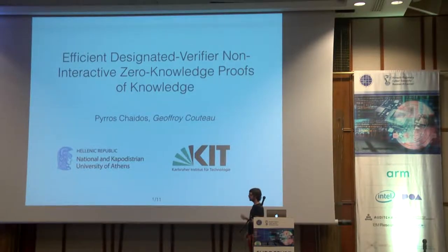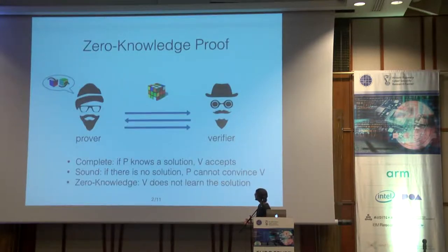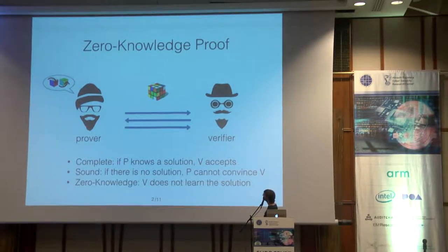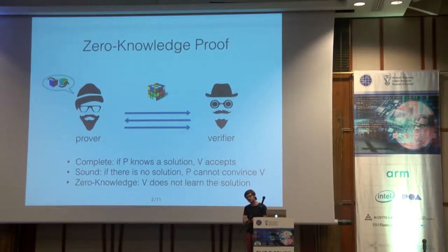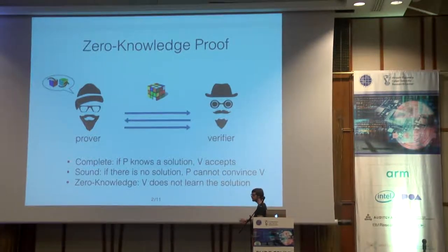It's a joint work. So first of all, what is this way too long thing? A zero-knowledge proof is an interactive protocol between two parties, a prover and a verifier. There is some puzzle, and the prover claims that there is a solution to the puzzle. At the end of the interaction, the verifier should be convinced if and only if there is a solution, and you should not learn anything about this solution except from the fact that it exists.